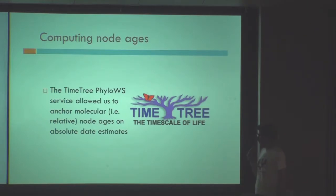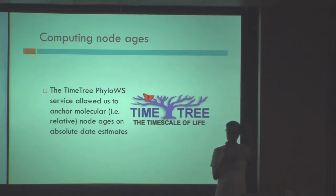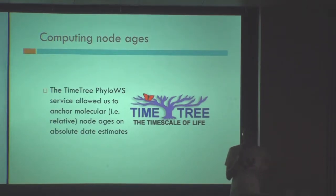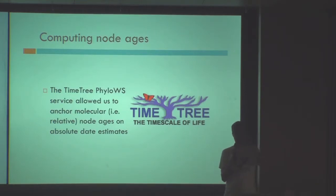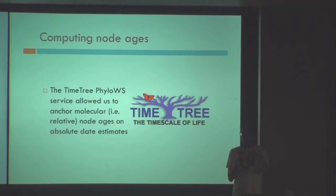So we accessed TimeTree. TimeTree is a curated database where you give it two NCBI taxon identifiers and it returns the age of the most recent common ancestor between those two taxa. Thanks to earlier bioquery work we had already fetched the NCBI IDs, so we could easily traverse the tree, get ages for the different nodes, and use those as anchors to calibrate our molecular branch length estimates. At this point we also knew when the speciation events had happened over the course of primate evolution.